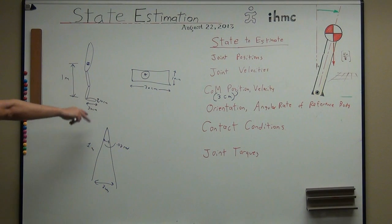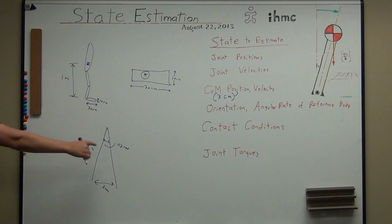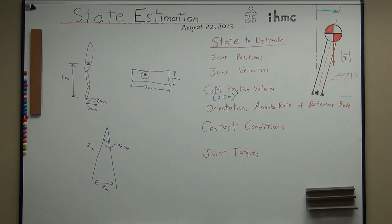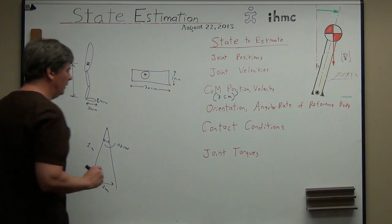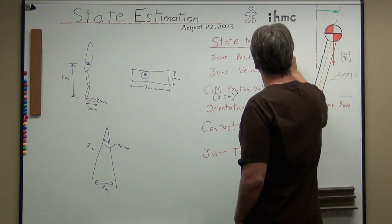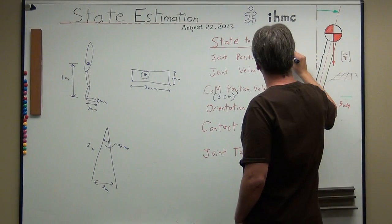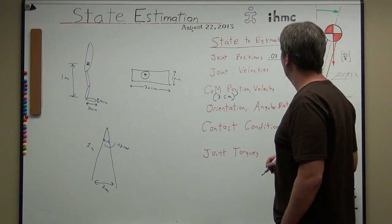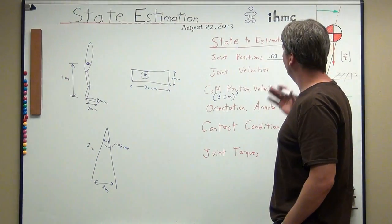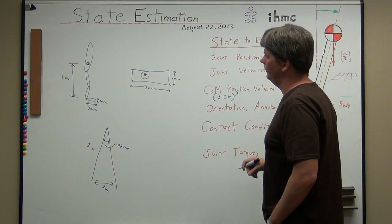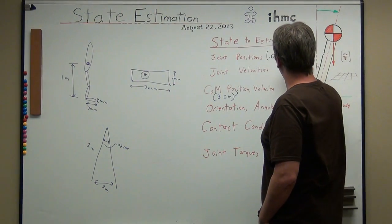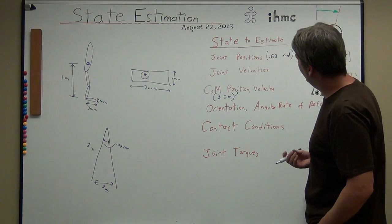So if your body orientation is off by more than 0.03 radians, your center mass is going to be off by more than three centimeters. How many degrees is that? About one and a half degrees. So joint positions need to be accurate to about 0.03 radians. If your joint positions are worse than that, you're going to have trouble. If any one joint is greater than that error, you're really having trouble. Somewhere on the order of 0.03 — if you can get better than 0.01, you're probably doing okay.